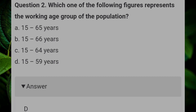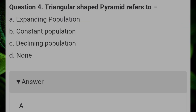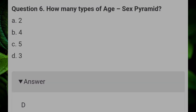Which one of the following countries has the highest sex ratio in the world? Answer: D, Latvia. Triangular-shaped pyramids refer to: Answer: A, expanding population. Which one of the following is reflected by age-sex pyramids? Answer: D, all of the above. How many types of age-sex pyramids are there? Answer: D, 3.